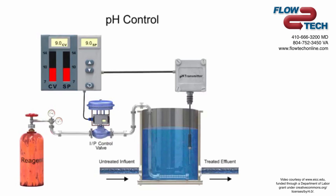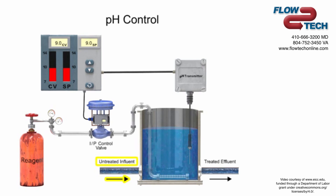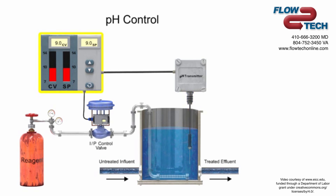An example of an automatic pH level control system is a water treatment process where lime-softened water is maintained at a pH of 9 using carbon dioxide as a reagent. As the untreated water or influent enters the tank, the pH is continuously monitored by the pH sensor. The sensor is the feedback device to the controller where the setpoint is compared to the control value.